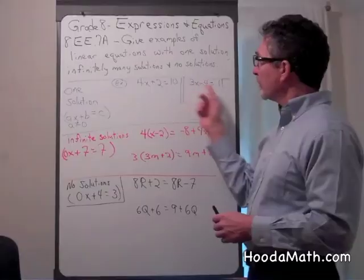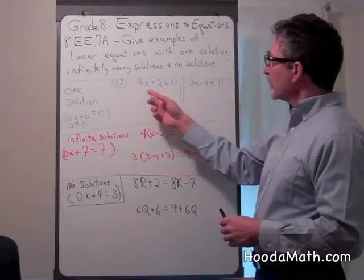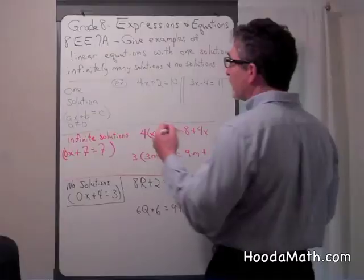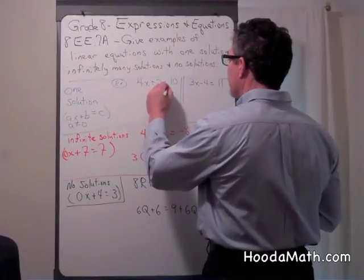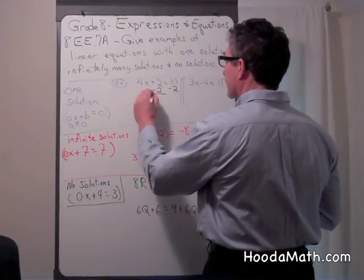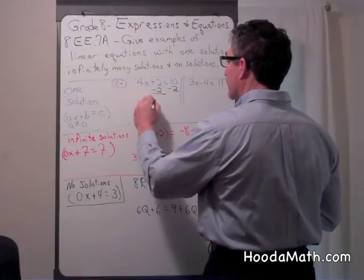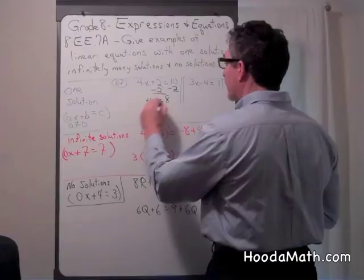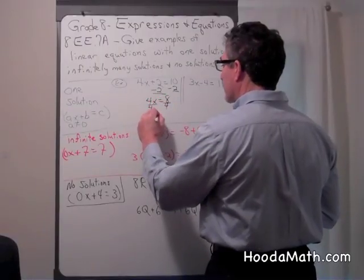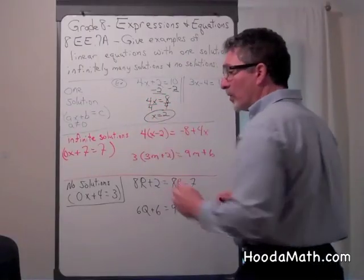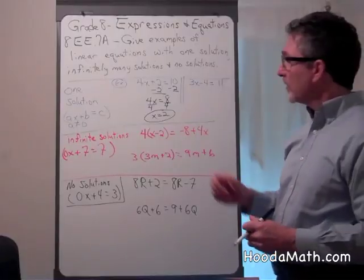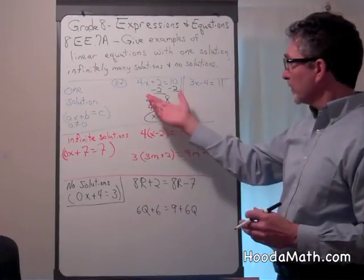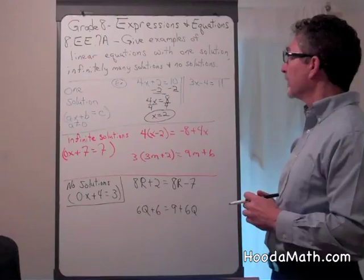I'm giving you two examples here. So you would solve by subtracting 2 from both sides, and you get 4x equals 8, then divide both sides by 4, and x equals 2. There is only one solution for this particular linear equation.